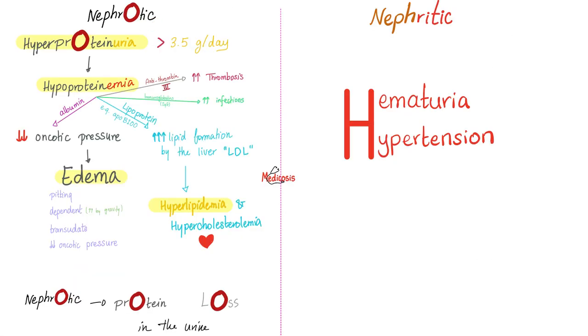Nephrotic syndrome: high protein in the urine, low protein in the blood — proteinuria and hypoalbuminemia — along with edema and hyperlipidemia.